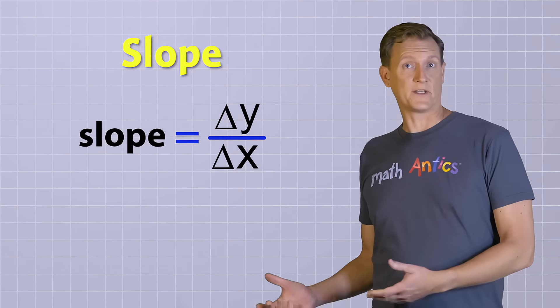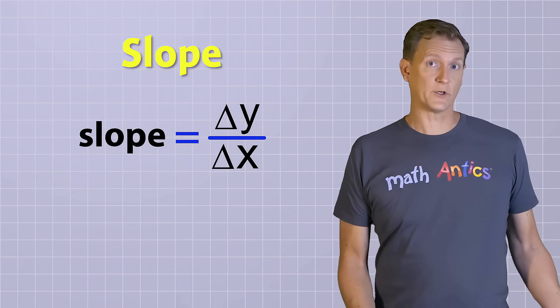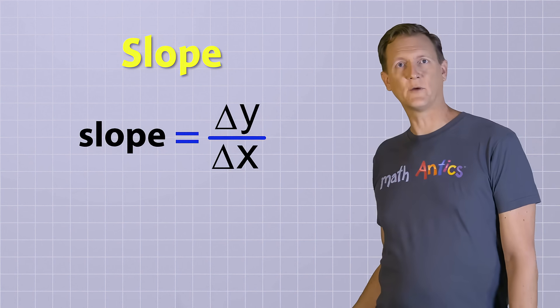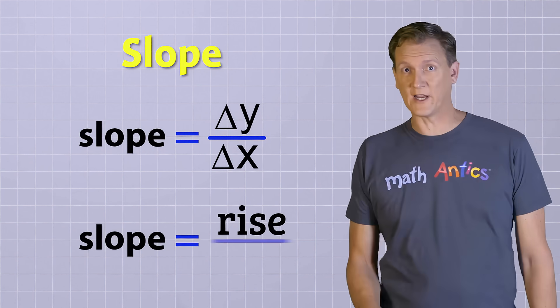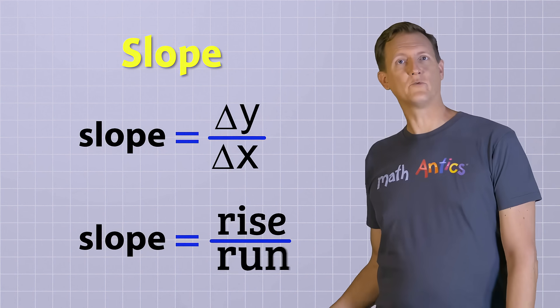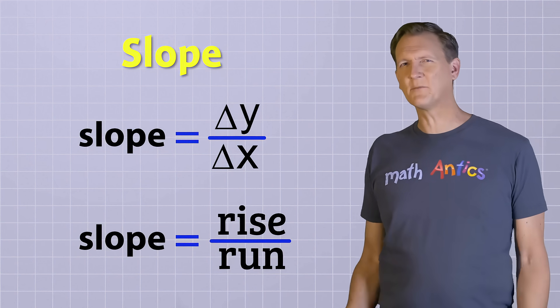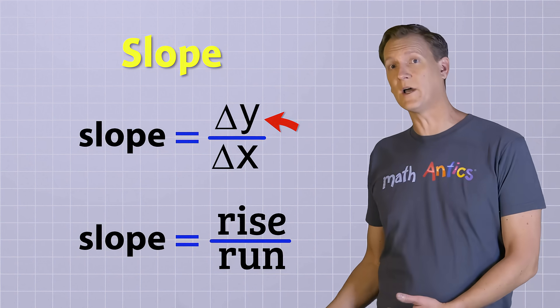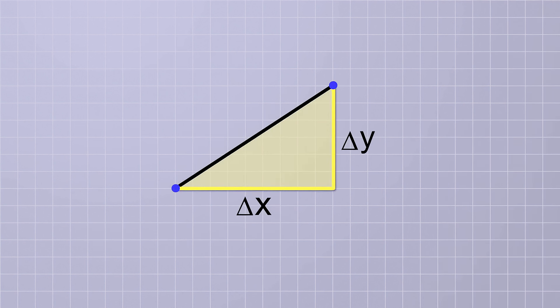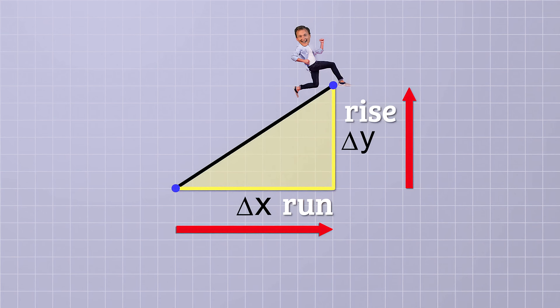And some of you may have heard this same equation expressed using different terminology. Have you ever heard someone say that slope equals rise over run? Rise and run are just different names that are sometimes used to describe the change in y and the change in x. The idea is that if you were to run along the line in the x direction, you would rise by a certain amount while you did that. Or would you?